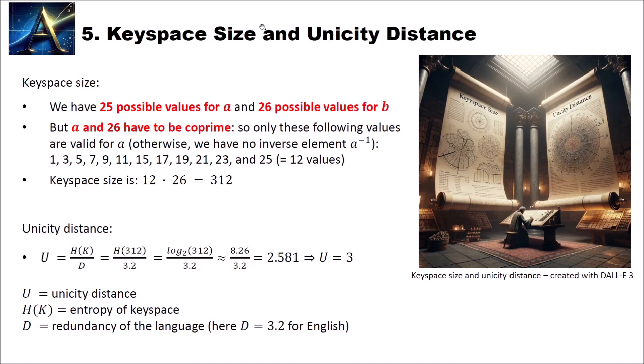Now let's have a look at the key space size and unicity distance of the affine cipher. We have 25 possible values for a and 26 possible values for b. Remember, we convert our letters to numbers. And we have 26 letters. But the A is converted to 0. And if we multiply with 0, we have not a valid encryption and decryption. So we can only take 1 up to 25 for a, not the 0. But for b, it is possible. If we just add 0, we basically remove the b. And this is still valid. This is why b has one possible value more than a.